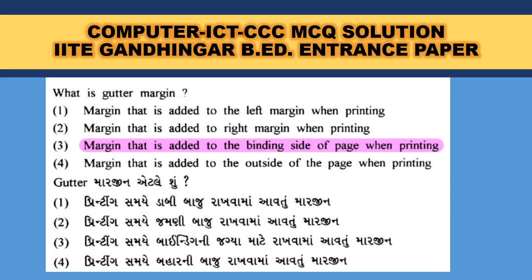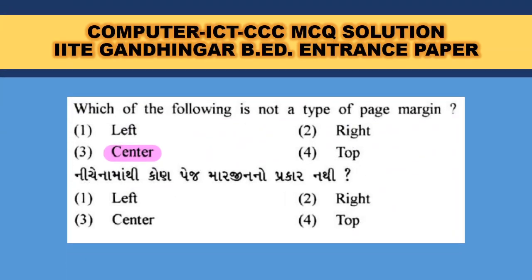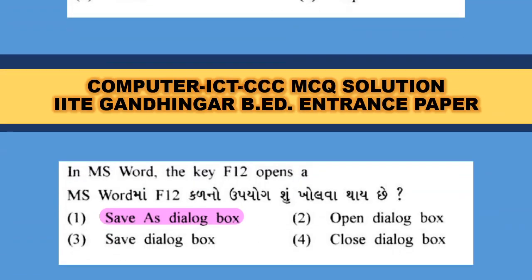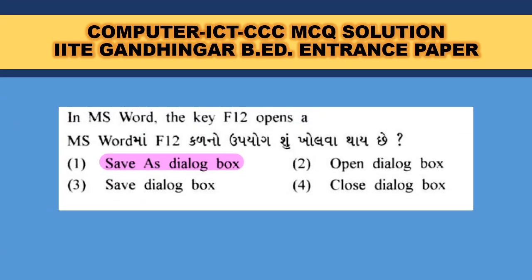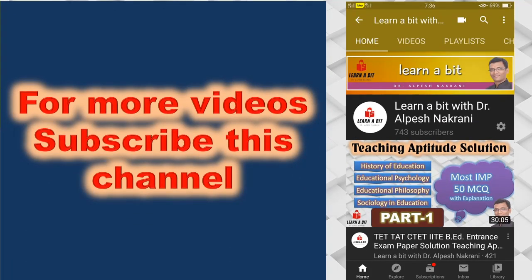What is gutter margin? The margin that is added to the binding side of the page for the extra space required for binding — three is the correct answer. Which of the following is not a type of page margin? Left, right, and top sides are margins — Center is not a page margin. In MS Word, the key F12 opens the Save As dialog box.